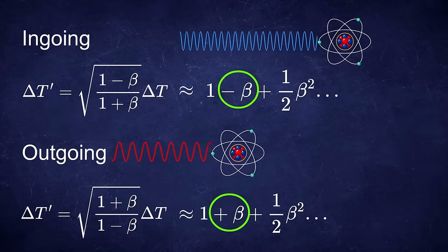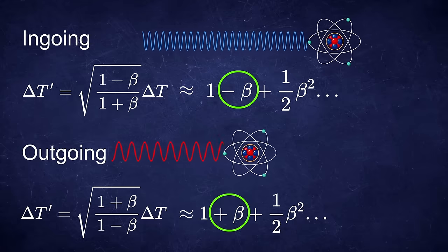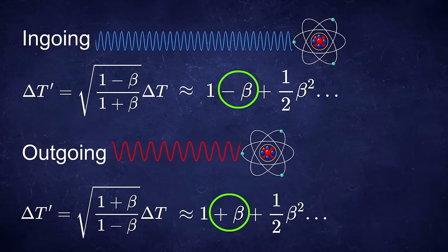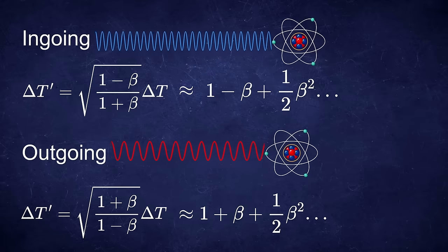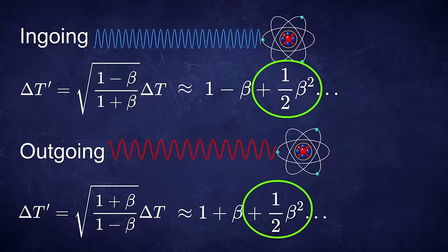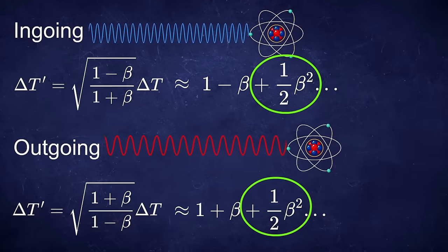You see that the first order of beta there is only a sign difference as it should be due to classical longitudinal Doppler effect. But when you look at the second order term you see that the sign is the same.